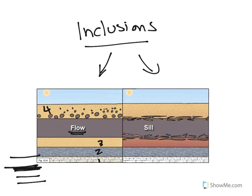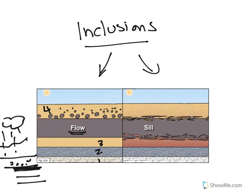Then layer 4 got deposited. But before 4 got deposited, maybe some rain beat down on this material or wind whipped across it, and the top part of the lava flow started to break up. So we've got rubble pieces sitting on top, and when that next layer got deposited, it includes some of those eroded pieces. This is how we can tell this is a lava flow.